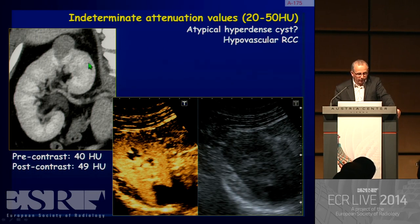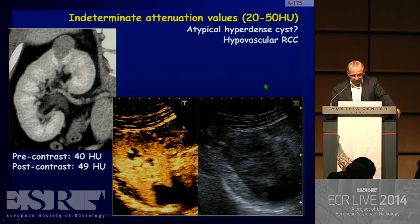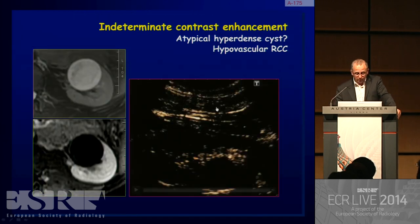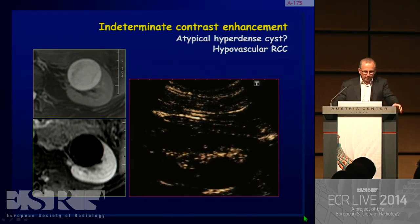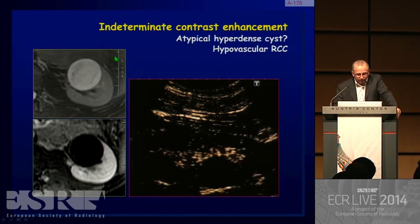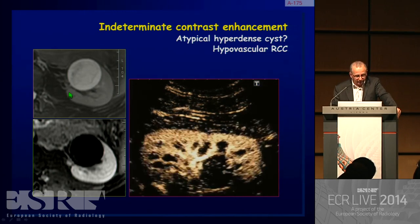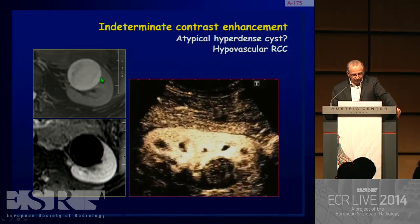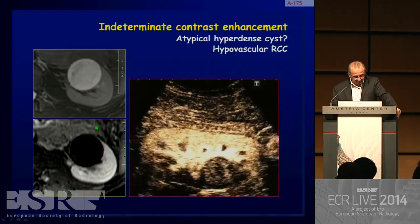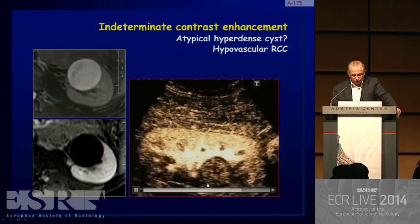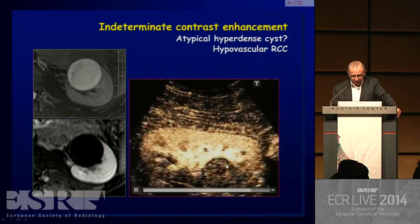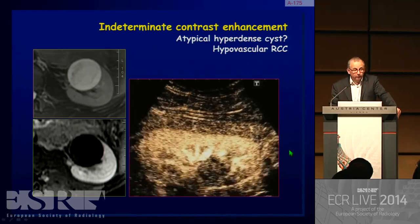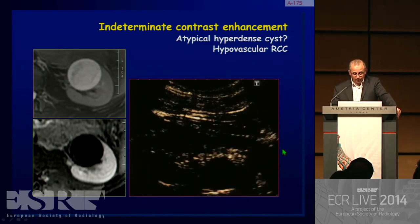In doubtful cases, contrast-enhanced ultrasound can be helpful by demonstrating the lack of enhancement at the arrival of microbubbles. Sometimes even MRI can fail — as seen in a papillary cancer with no enhancement after injection on MRI — where contrast-enhanced ultrasound shows weak but obvious enhancement, leading to the diagnosis of papillary renal cell carcinoma.